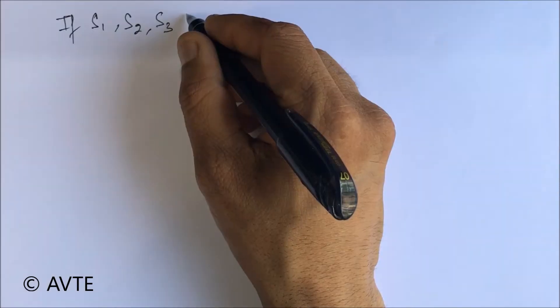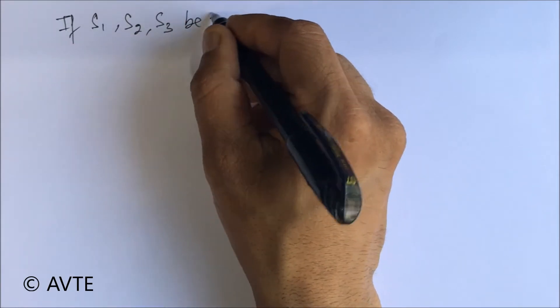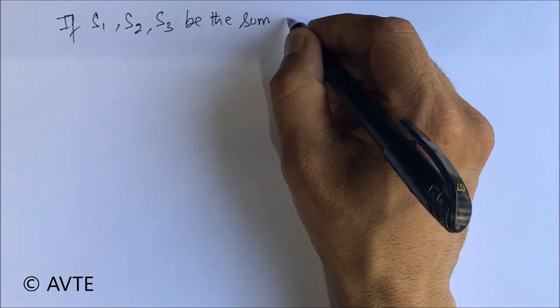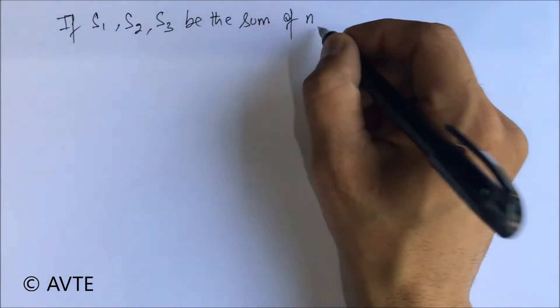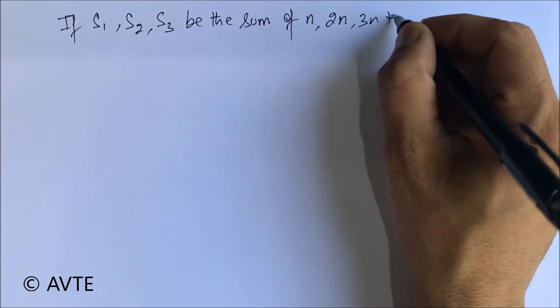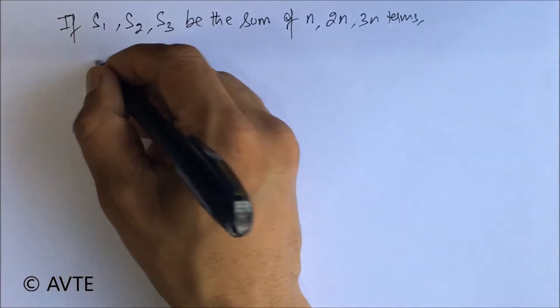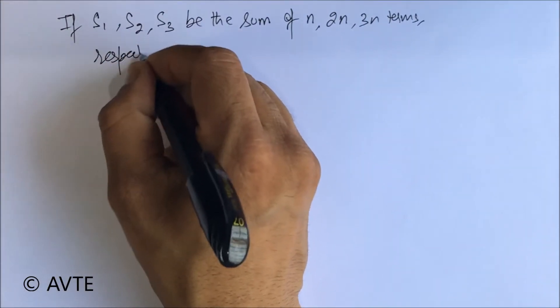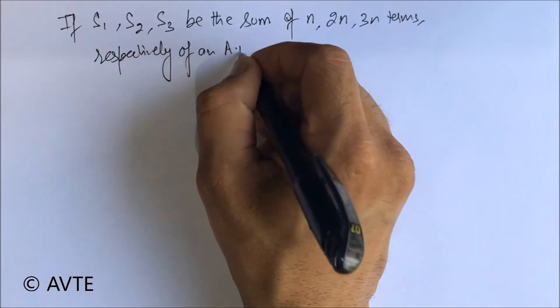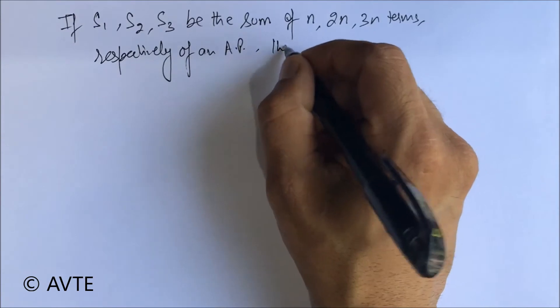I'm taking a question on AP with the sum of n, 2n, and 3n terms respectively of an AP, then show that.